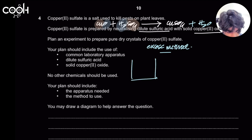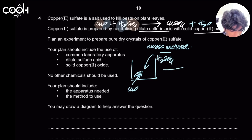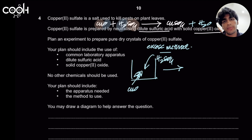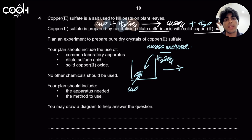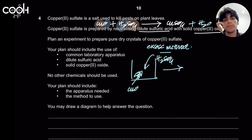In the excess method, copper oxide is taken in excess and the acid is the limiting reagent. This is because it is much easier to remove excess copper oxide through filtration rather than removing excess acid. If the acid were in excess, that would be an error — it's very difficult to separate acid from the aqueous solution formed.